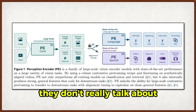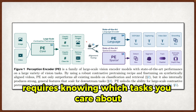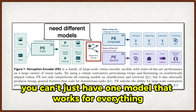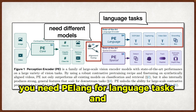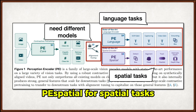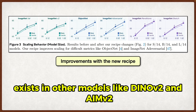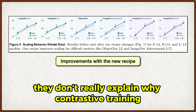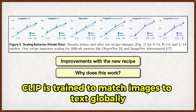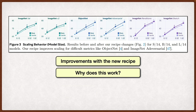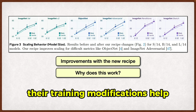But there are some limitations they don't really talk about. First, this whole alignment process requires knowing which tasks you care about ahead of time — you can't just have one model that works for everything. You need PeLang for language tasks and PeSpatial for spatial tasks. Also, while they show this intermediate layer phenomenon exists in other models like DINOv2 and AIM V2, they don't really explain why contrastive training would produce good spatial features in the first place. CLIP is trained to match images to text globally — why would it learn local spatial correspondences?